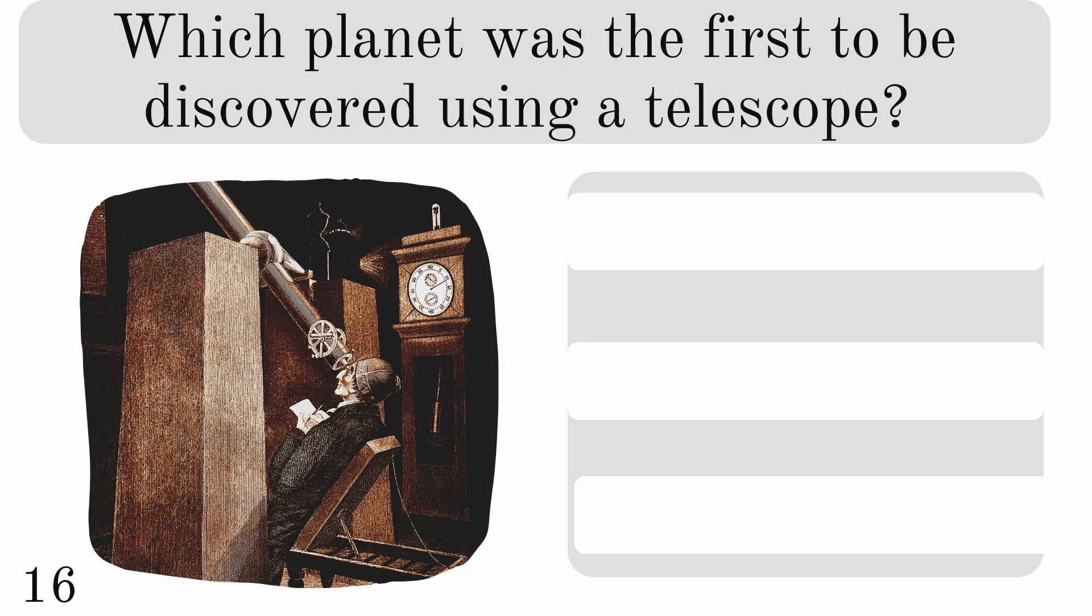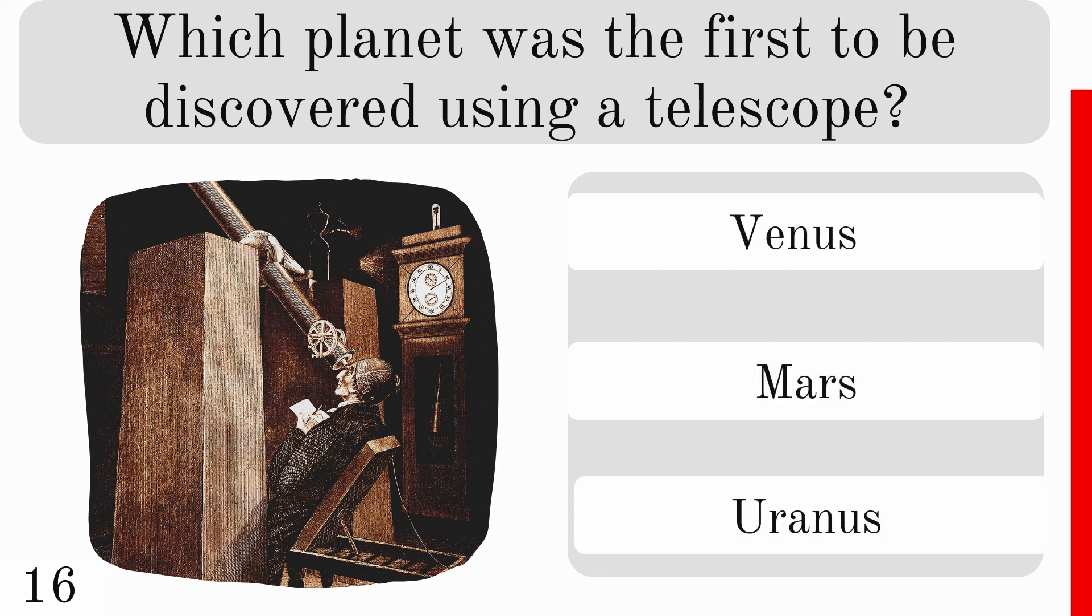Which planet was the first to be discovered using a telescope? Venus, Mars, or Uranus? And the correct answer is Uranus.